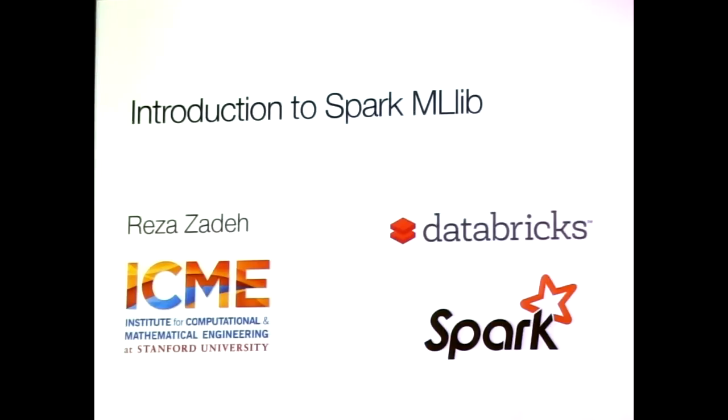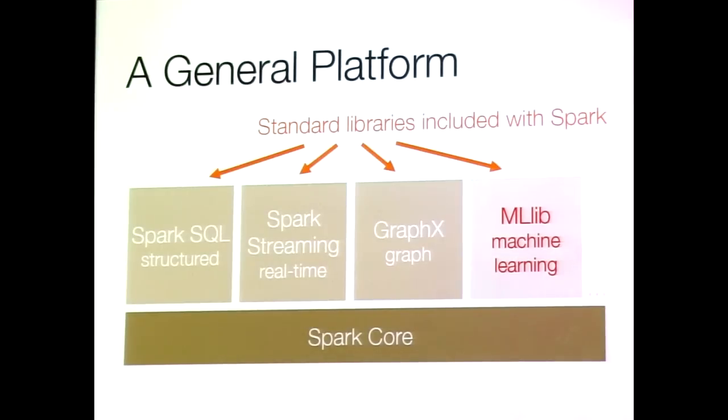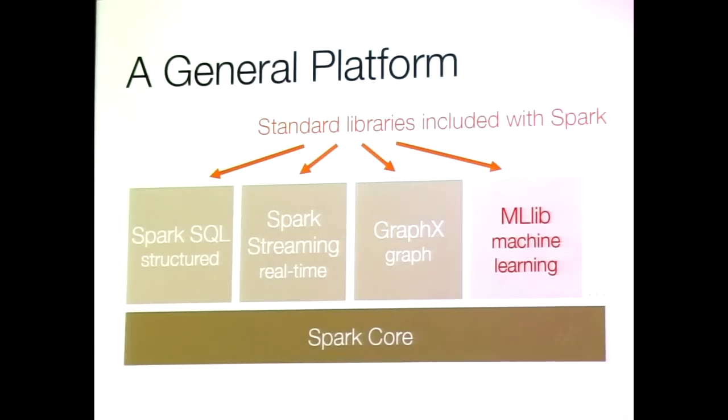The Spark MLlib library is one of four libraries built on top of Spark Core, the general distributed computing library. Spark is made up of Spark Core, which is the basic idea — fairly stable code-wise and API-wise. There's a large amount of growth in the libraries right now. The libraries provided are SQL, streaming, GraphX, and MLlib.